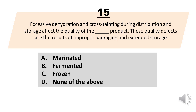Excessive dehydration and cross-tainting during distribution and storage affect the quality of the blank product. These quality defects are the results of improper packaging and extended storage. A. Marinated. B. Fermented. C. Frozen. D. None of the above. The correct answer is Letter C, Frozen.